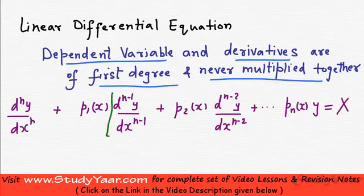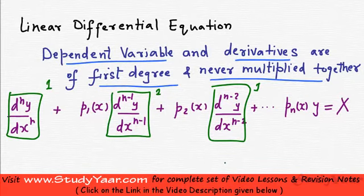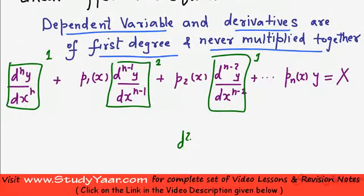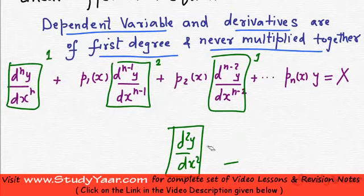Also, all the derivatives should have a degree of 1, as you can see in this particular equation, and they should never be multiplied together. You should never have something where the derivative term and the dependent variable are multiplied. When you have these two conditions met, what you get is a linear differential equation.